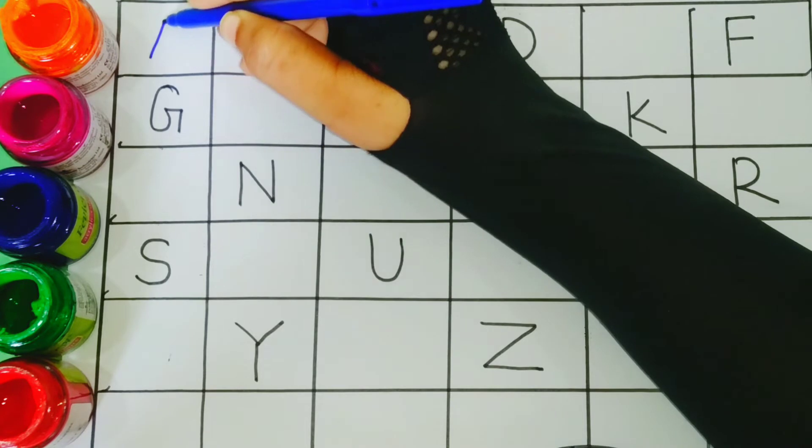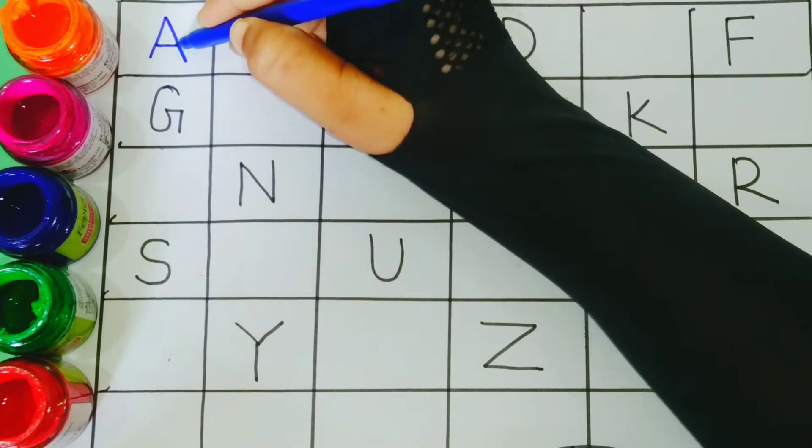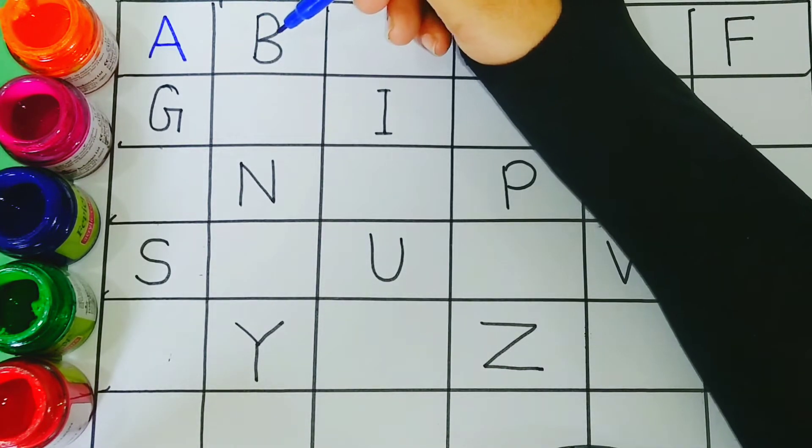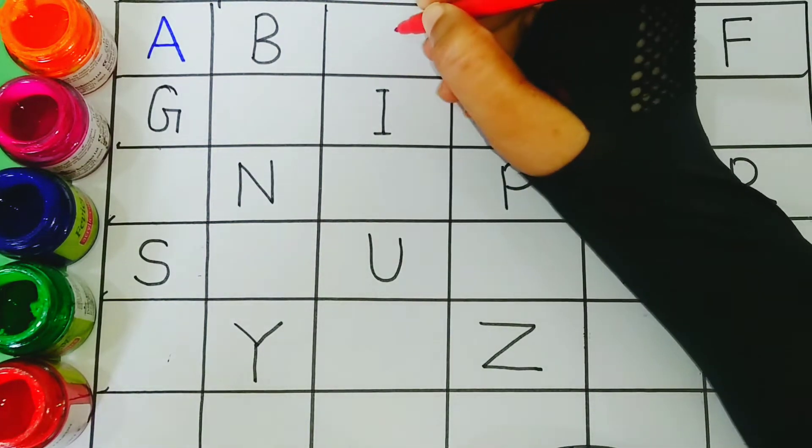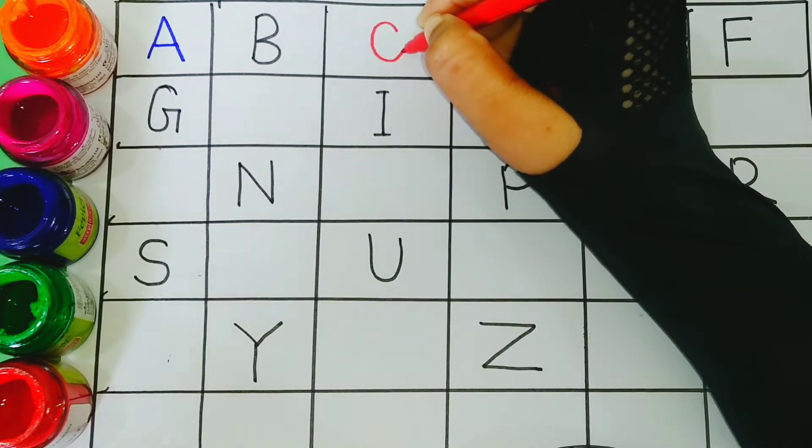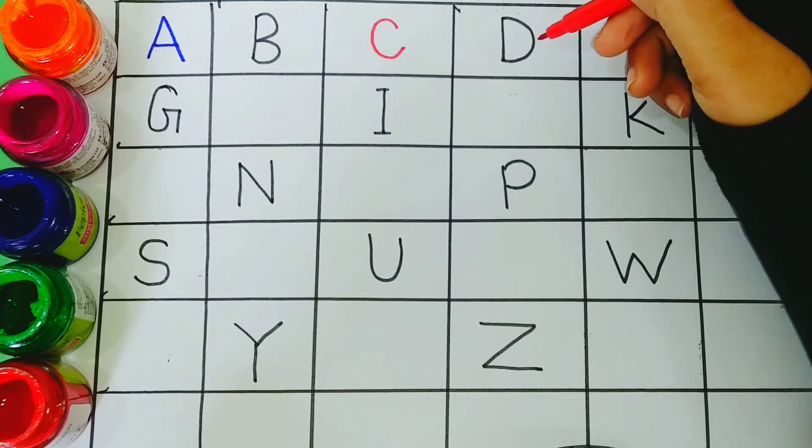A. A for apple. B. B for ball. C. C for cat. D. D for dog.